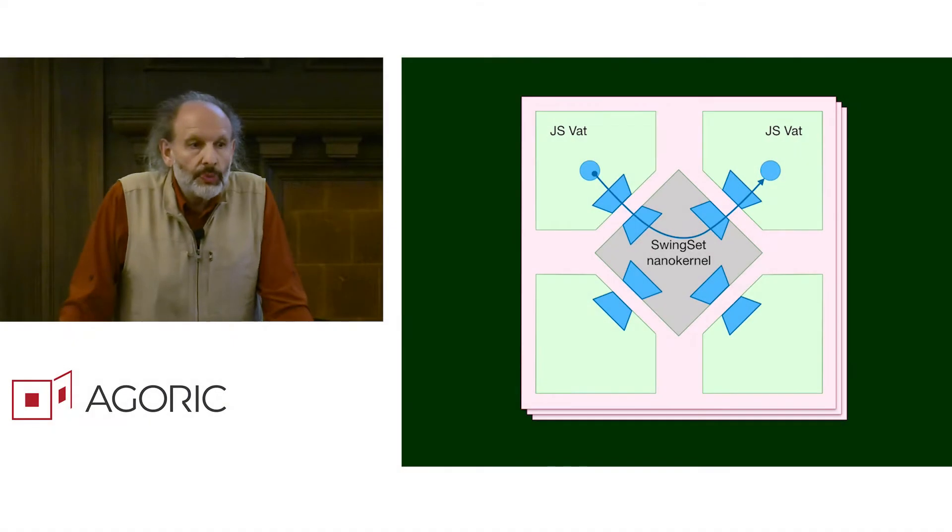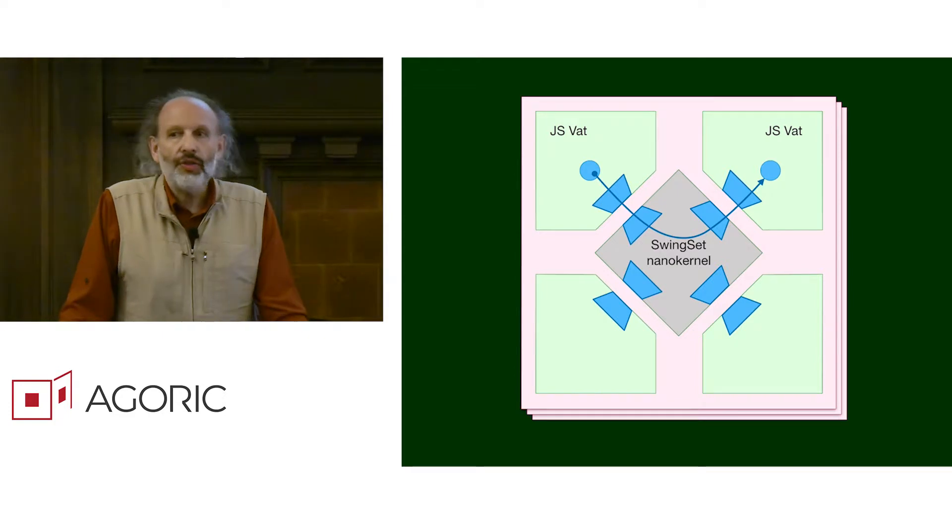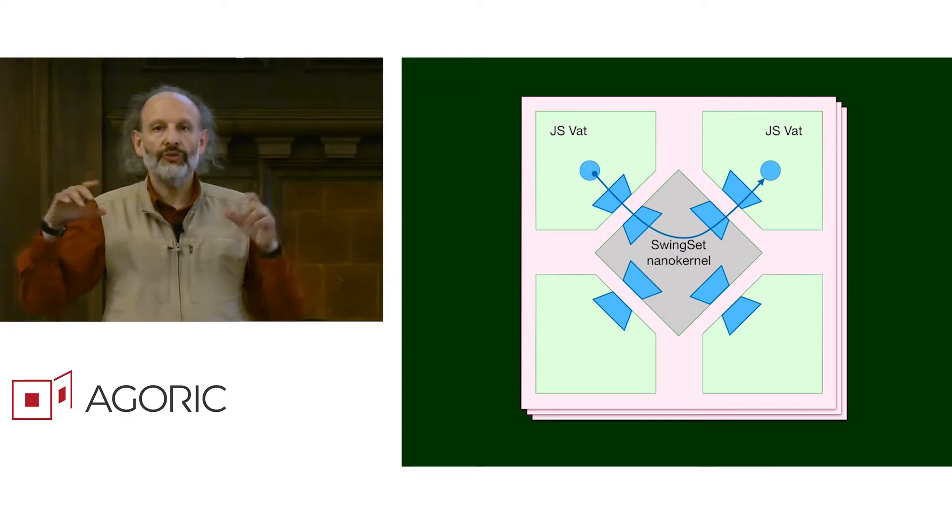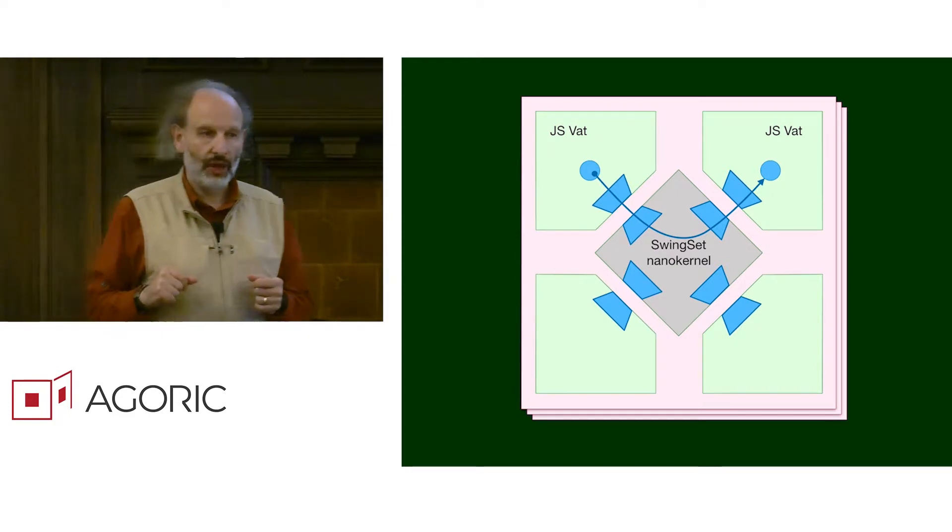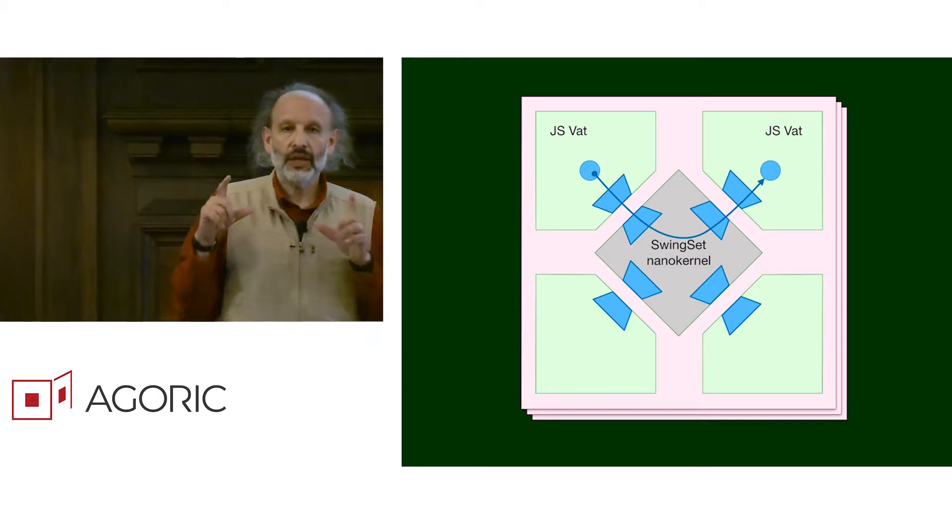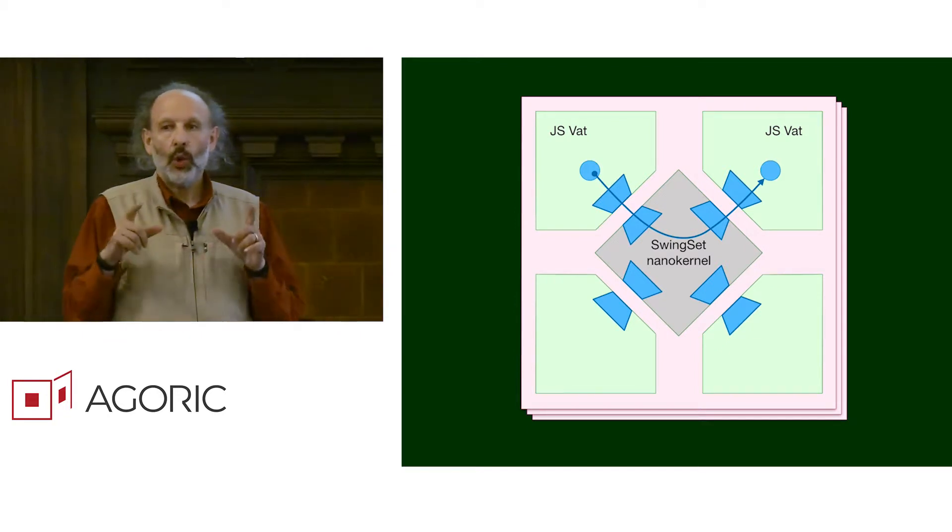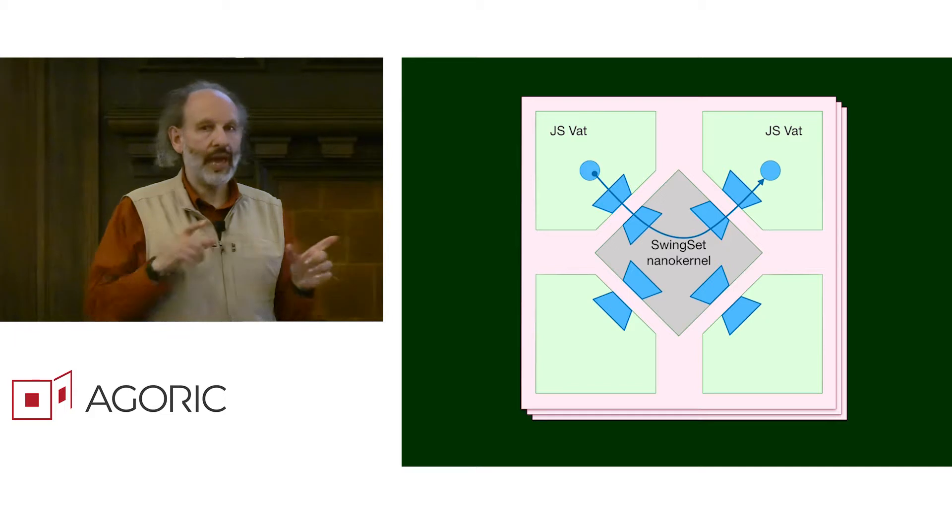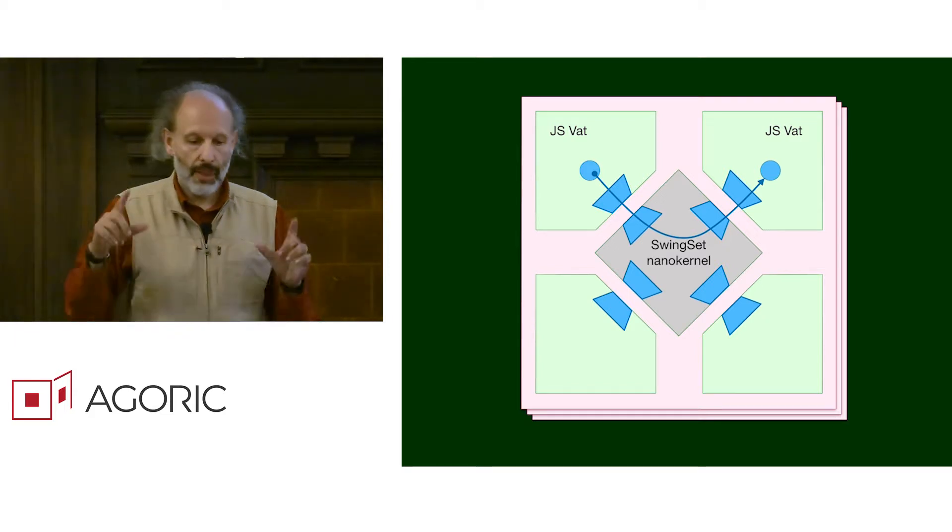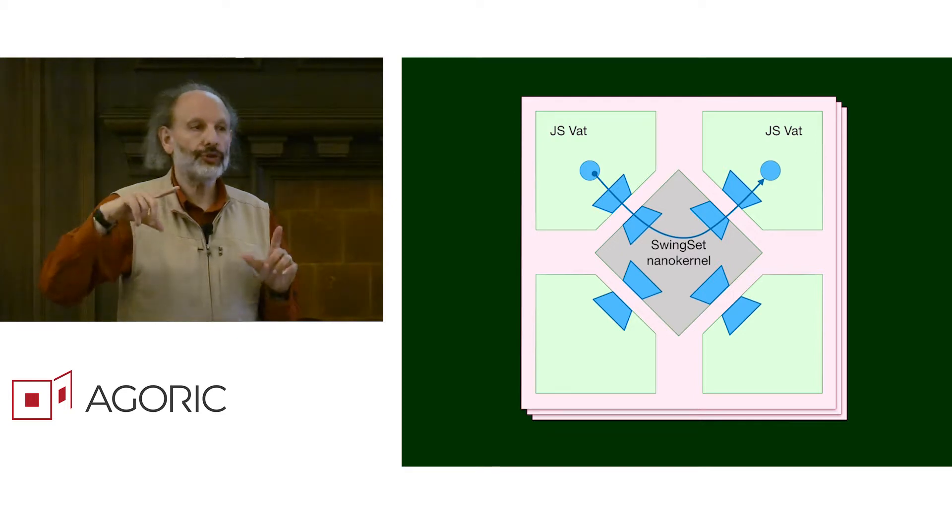When you have multiple VATs in a single chain, the VATs together are considered part of what we call a swing set. A VAT is a unit of synchrony where VATs interact only asynchronously with each other, but a swing set is a unit of determinism.